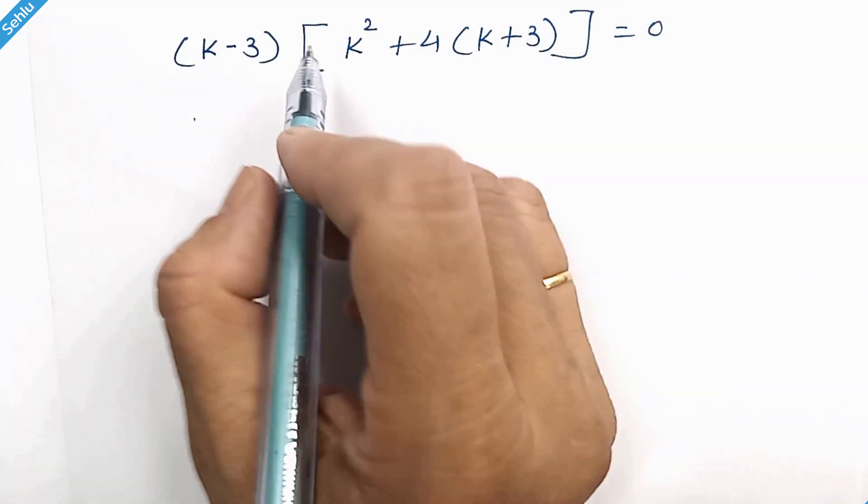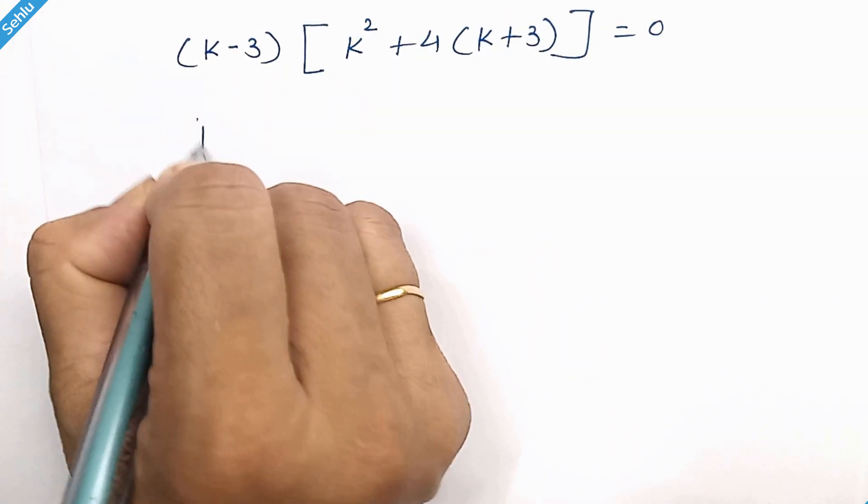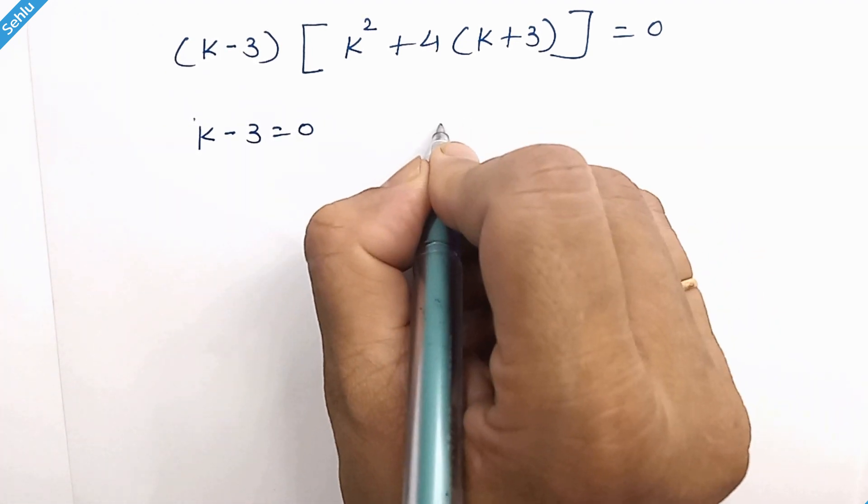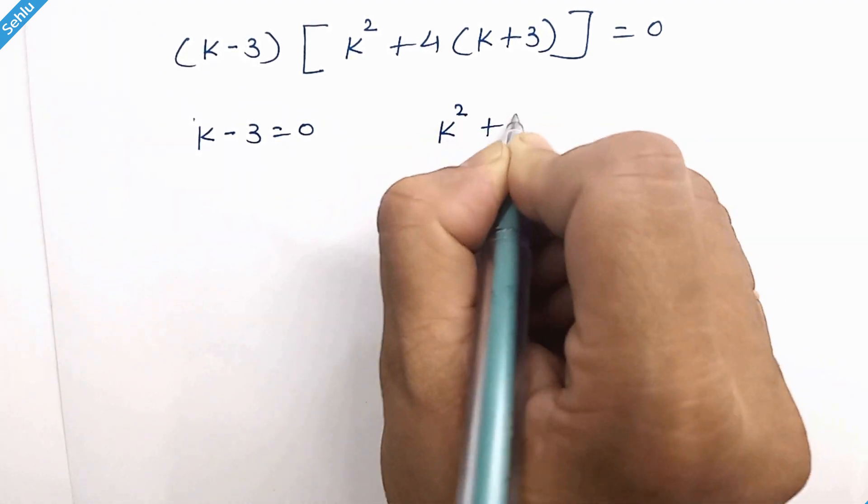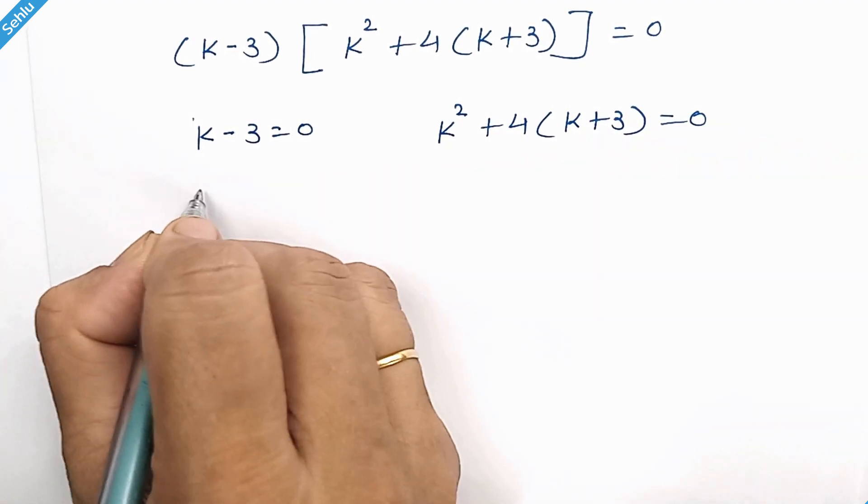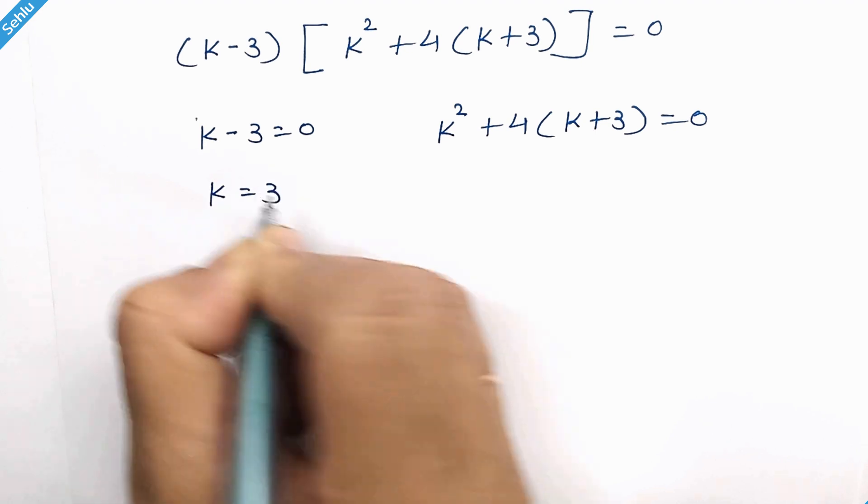So here we have two possibilities: k minus 3 is equal to 0 and k square plus 4 times k plus 3 is equal to 0. So here we have k is equal to 3.